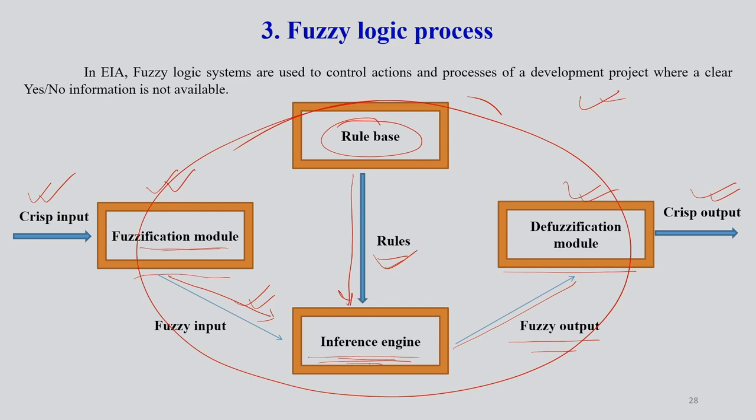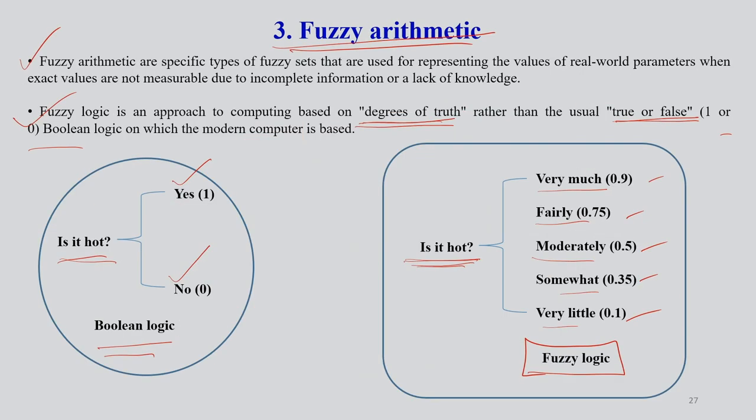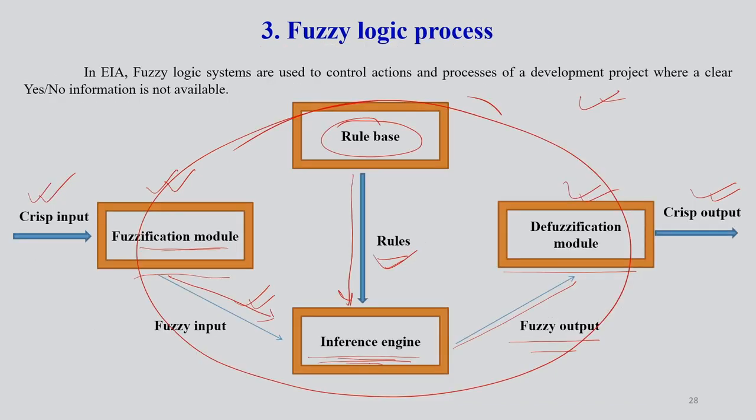In Boolean logic we only say yes or no, hot or not hot. But here we can talk about the level of hotness. That's why fuzzy logic can capture much more information and give more information about a particular impact or event.